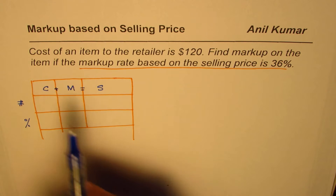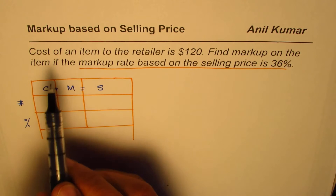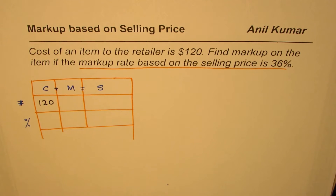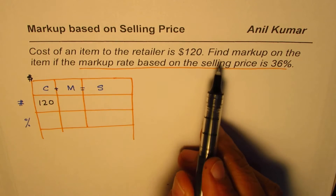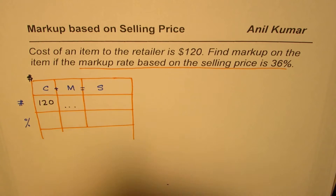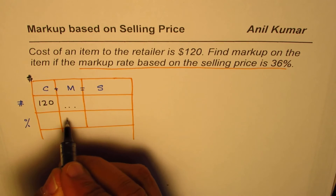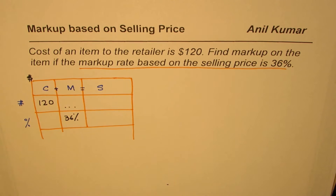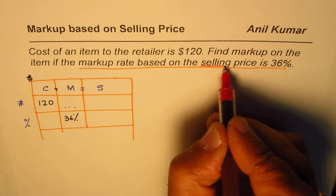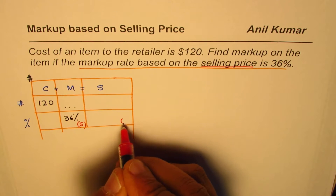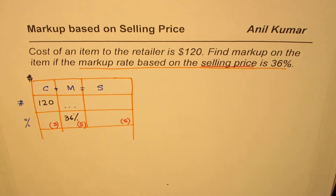What are we given? We are given that the cost of an item to the retailer is $120 — all values are in dollars. We have to find the markup on the item. The markup rate based on selling price is 36 percent. It is based on selling price, not the cost price. So for our question, the base is selling price.